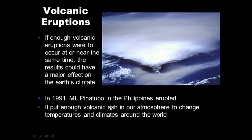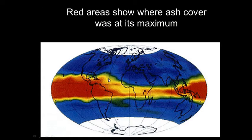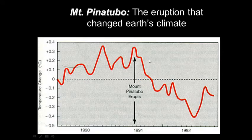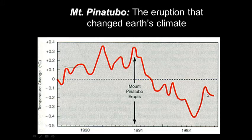In 1991, Mount Pinatubo in the Philippines erupted — it put enough volcanic ash into our atmosphere to change temperatures and climates around the world. The red and yellow areas show where ash coverage was at its maximum, concentrated around the equator where Earth receives most of its sunlight. The result: Earth's average temperature dropped by about half a degree. A half a degree was enough to alter Earth's climate — and that was just one massive volcanic eruption.